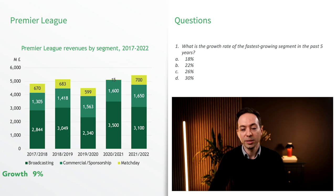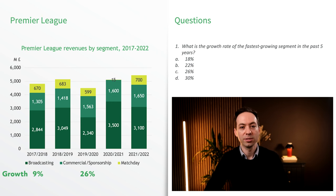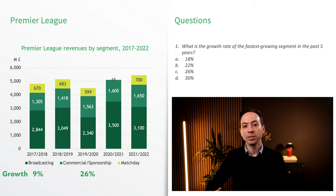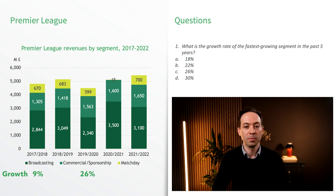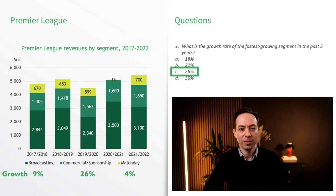The growth rate for Commercial Sponsorship is 26%. Lastly, Match Day revenues were 700 million pounds in 21-22 and 670 million in 17-18, giving a growth rate of 4%. Based on this, the fastest growing segment is Commercial and Sponsorship revenues.